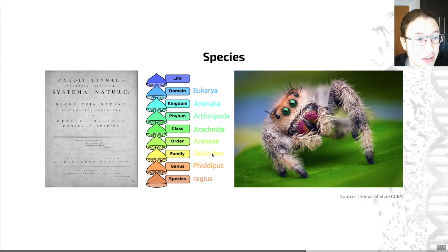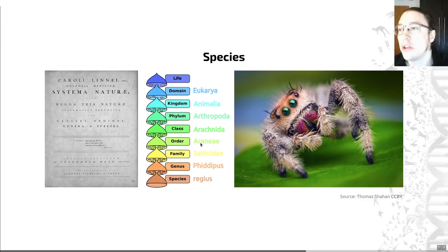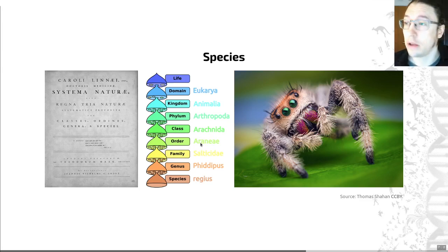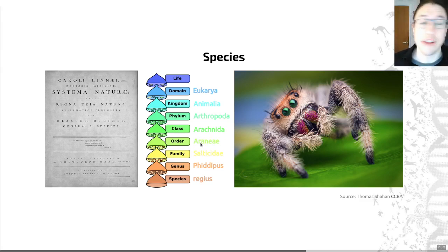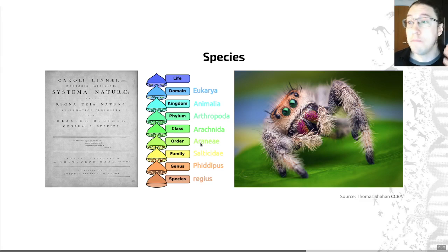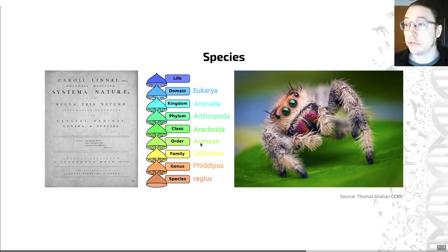The Salticidae are members of the order Araneae — the spiders. As well as jumping spiders, there is a huge diversity of different spider groups within this order. There are, for example, many more spiders than there are mammals; they're a very diverse group.